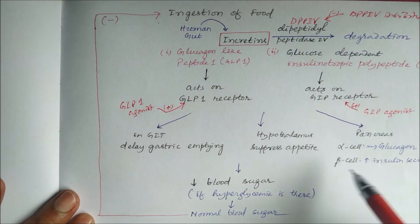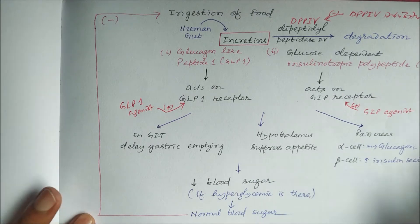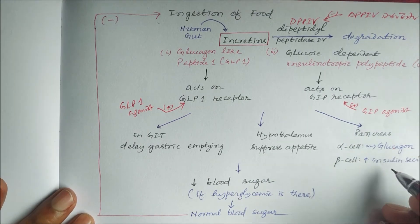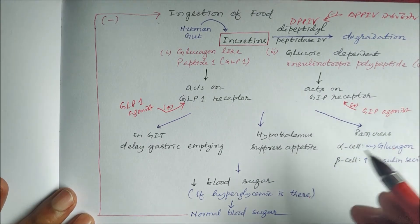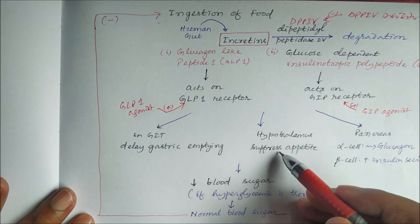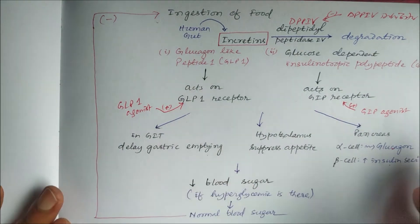All these drugs decrease blood sugar levels by four mechanisms: inhibiting glucagon secretion, increasing insulin secretion, suppressing appetite, and delaying gastric emptying.